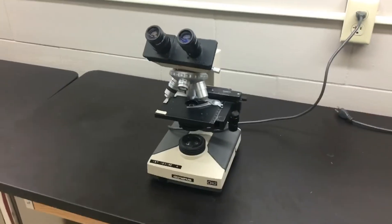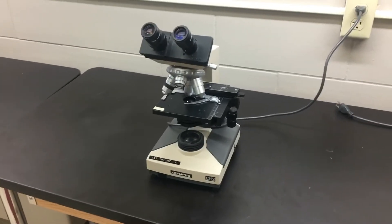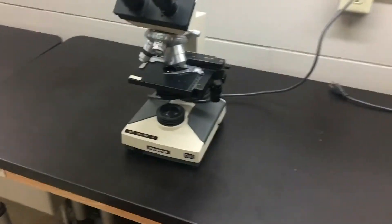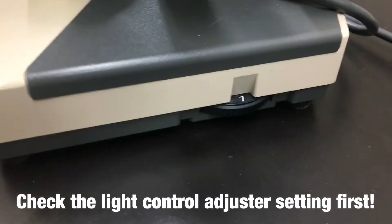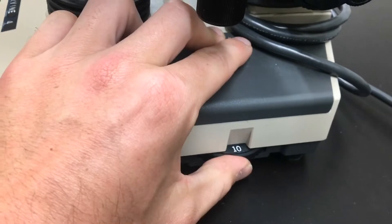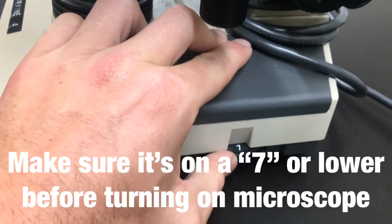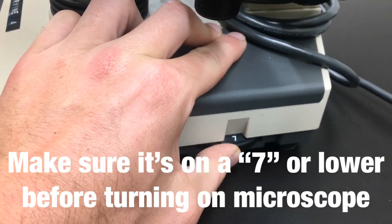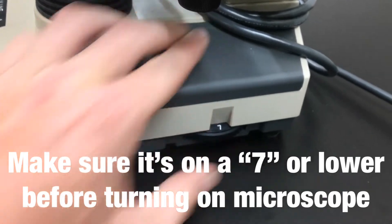So the first thing you want to consider before you even start and turn on the microscope is the setting on the side. You'll notice there's a light setting that goes from one all the way up to ten. Make sure that's on a seven or below before you turn it on. So that's a seven.